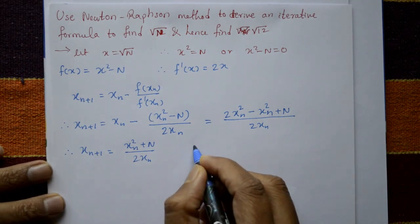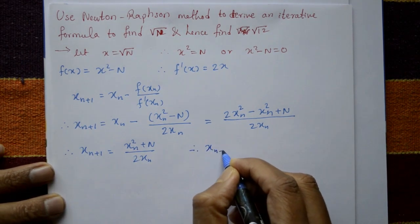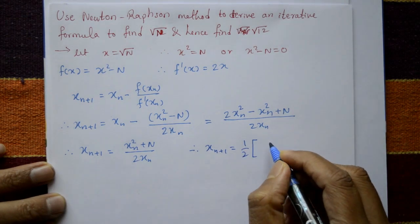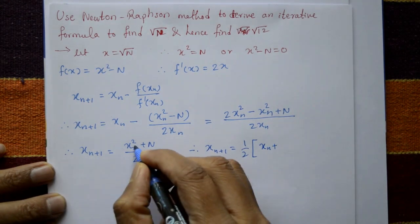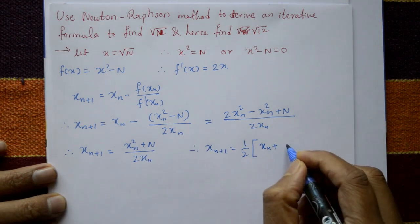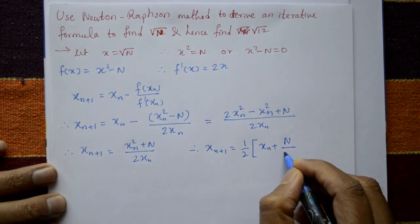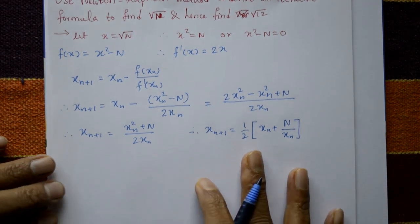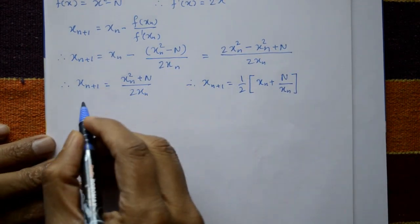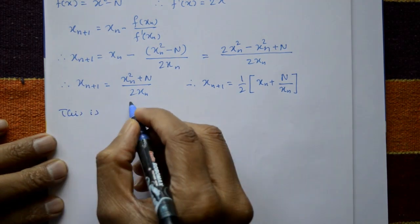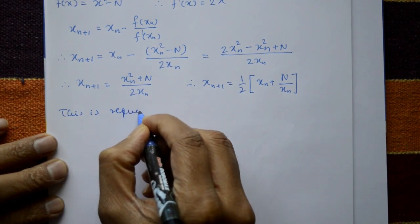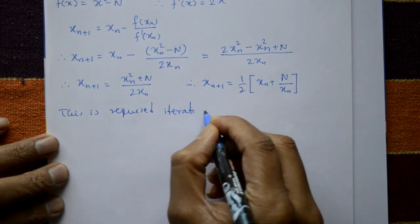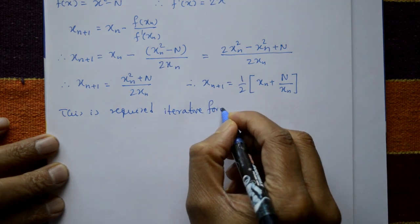Therefore x_{n+1} = ½(x_n + n/x_n). This is the required iterative formula for finding the square root of n.